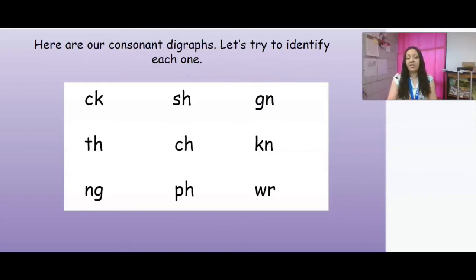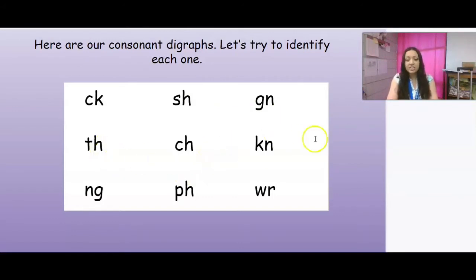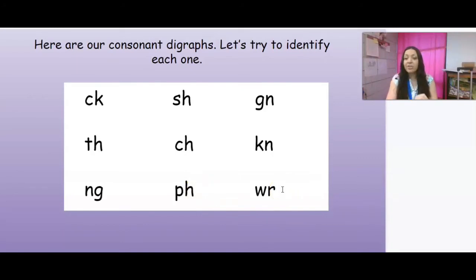Here are our consonant digraphs. We're going to try to identify each one. We have digraph C-K, digraph S-H, ghost, digraph G-N, digraph T-H, digraph C-H, ghost, digraph K-N, digraph N-G, digraph P-H, and then ghost digraph W-R.